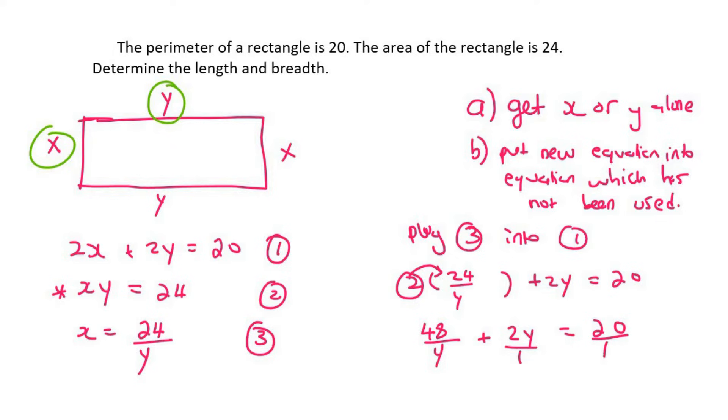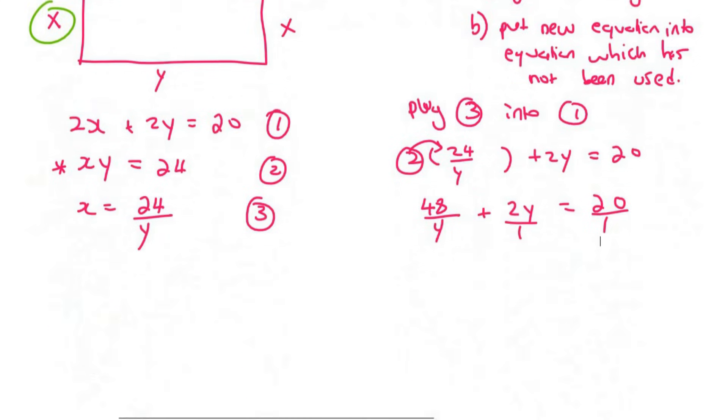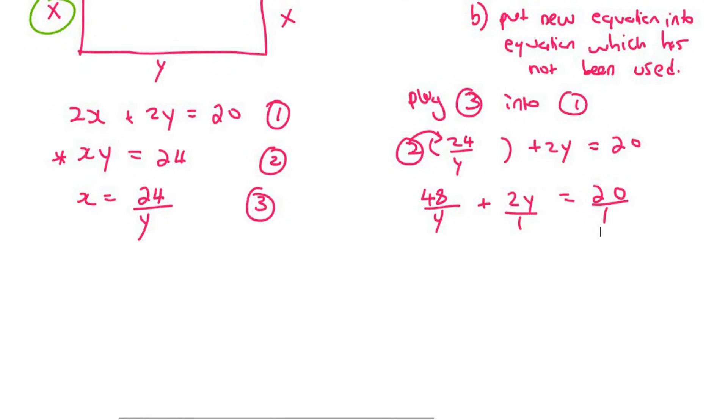Now we simply have a common denominator. That common denominator is going to be y, and so we're going to multiply everything by y. So this will stay 48 over y, plus 2y squared over y - because I multiplied top and bottom with y - equals to 20y over y. Now that we've got y's everywhere, we can ignore them at the bottom. And then we have 48 plus 2y squared equals to 20y.